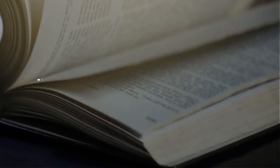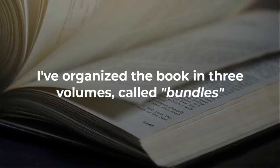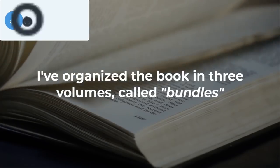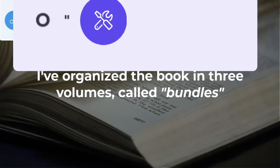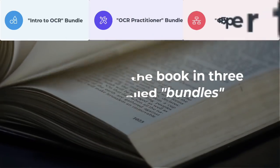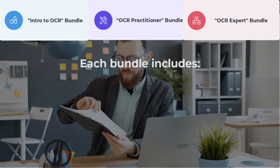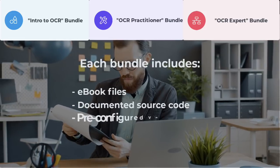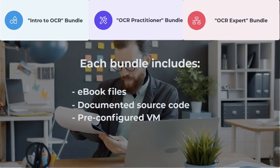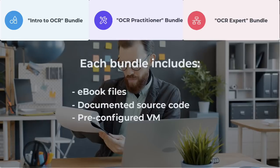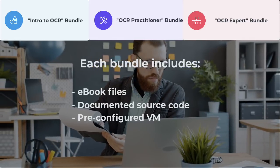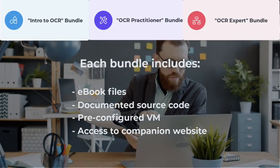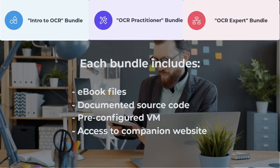Since we'll be covering so many OCR techniques in depth, I've decided to break the book down into three volumes, called bundles: the Intro to OCR Bundle, the OCR Practitioner Bundle, and the OCR Expert Bundle. Each bundle includes the e-book files, high-quality, well-documented source code, my pre-configured virtual machine with all the necessary computer vision, deep learning, and OCR packages pre-installed, and access to the book's companion website so you can further your knowledge, even when you're done reading the book.